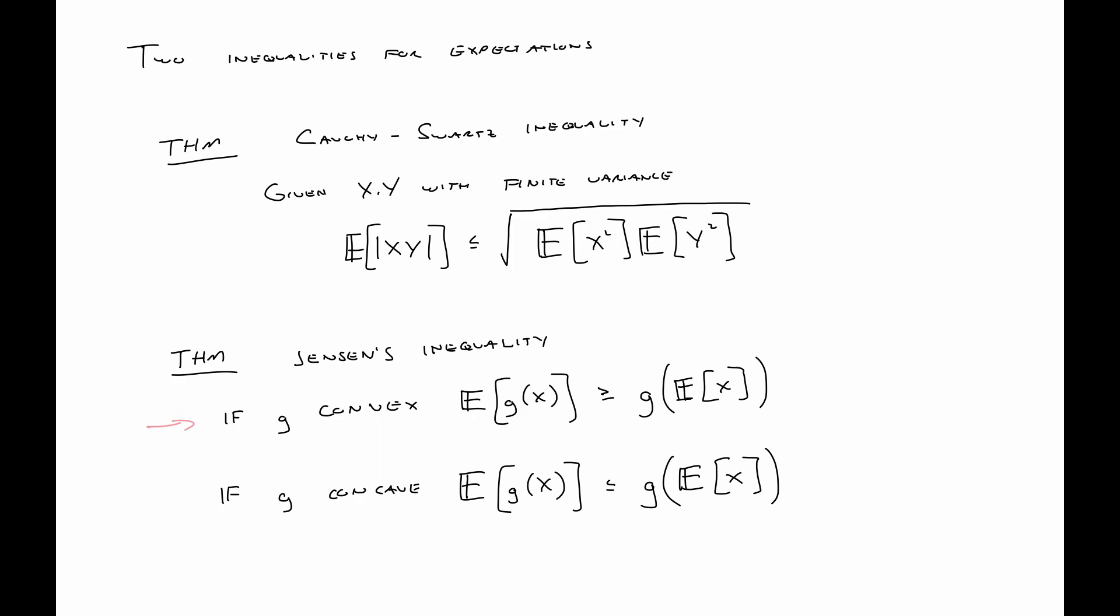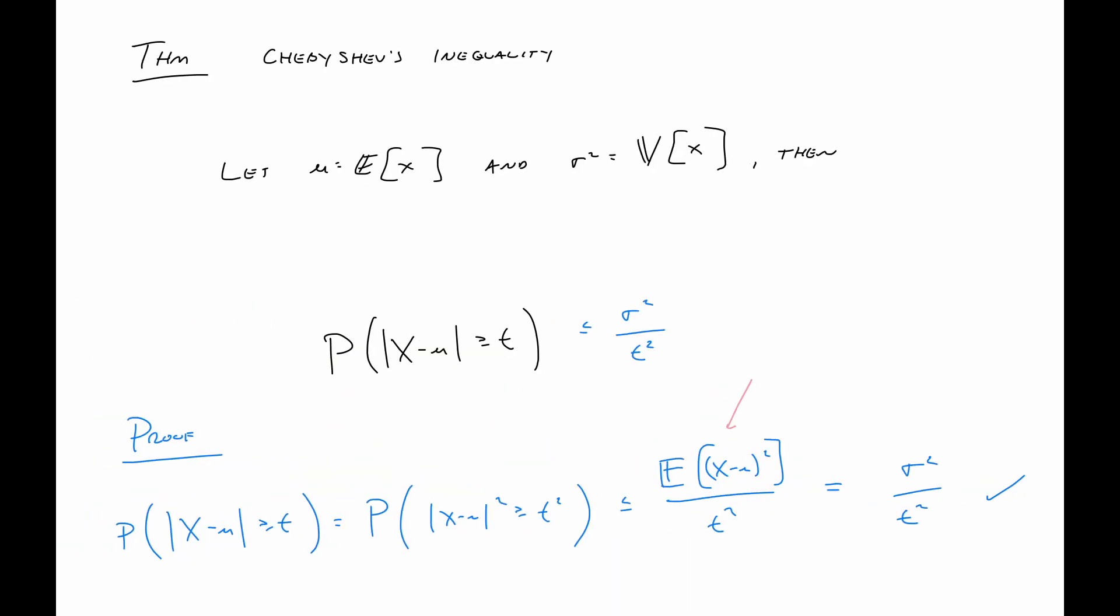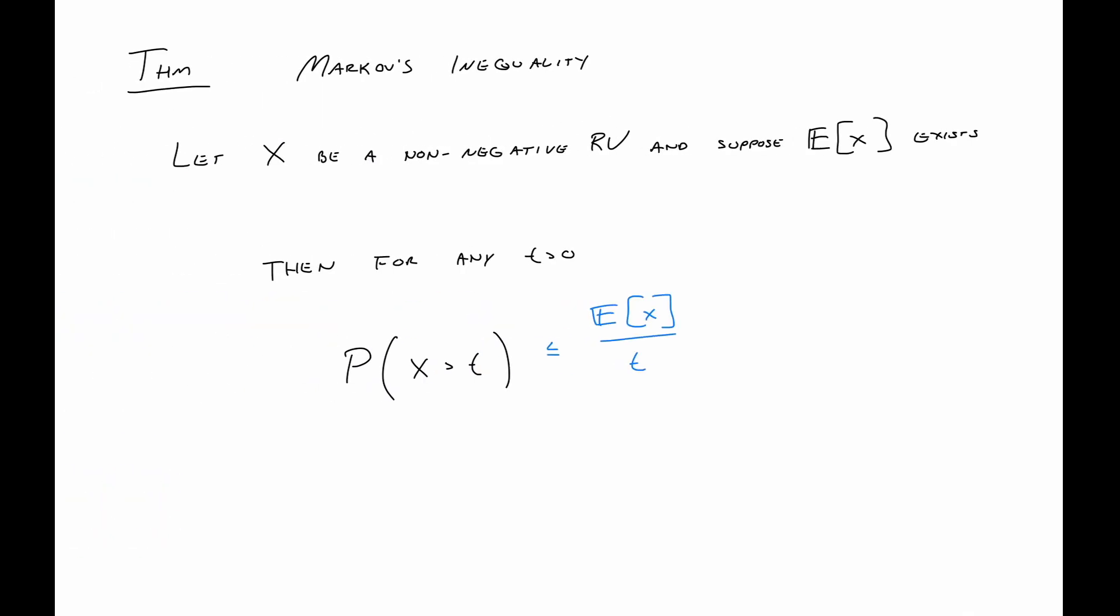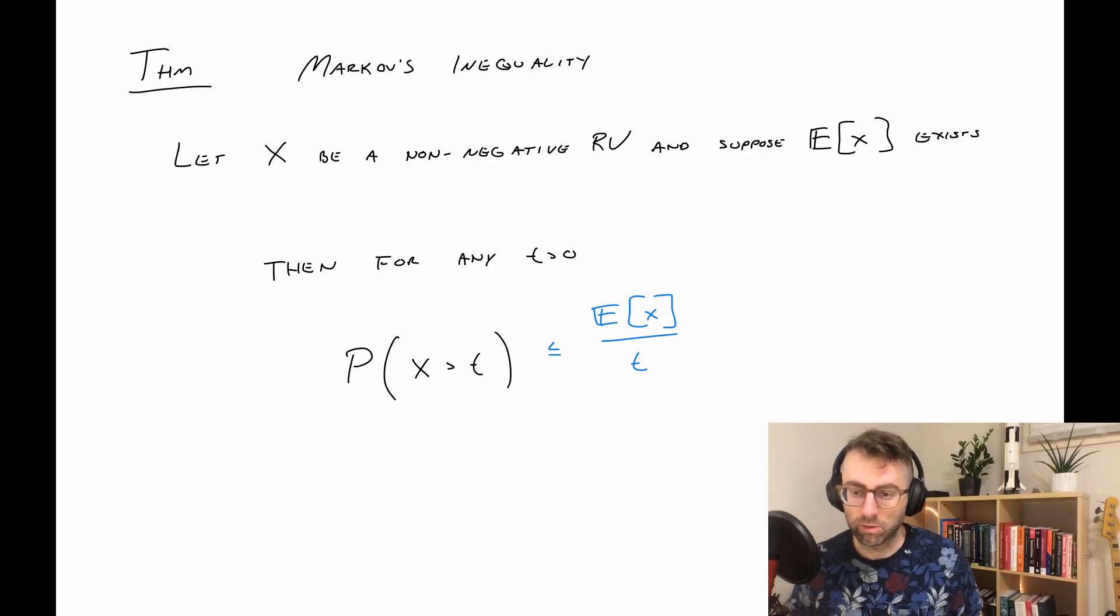Sort of a shorter video, but really the main takeaway here was Chebyshev's and Markov's, which give us some bounds on some probabilities but with not strong distributional assumptions, and those will come in handy in the next video where we talk about convergence. Normally I say if you made it to the end of the video good job, but hopefully this was short enough that everyone made it. But still, good job, and I'll see you in the next one.